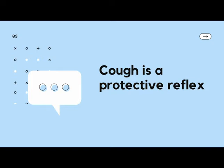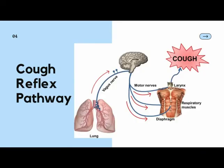Cough receptors are a specialized type of stretch receptors located in the tracheobronchial passages. Cough is marked by a forceful release of air from the lungs — there is a sudden involuntary reflex mechanism which produces cough. The steps of this reflex mechanism begin with stimulation of the mechano- or chemoreceptors present in the throat and respiratory passages, down to the smallest bronchioles in the lungs.